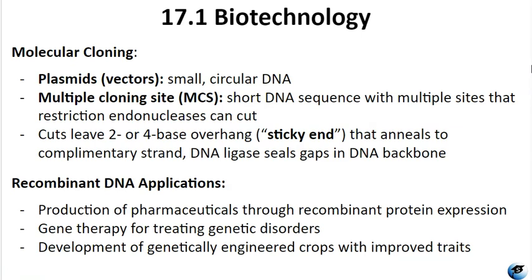Plasmids occur naturally in bacteria such as E. coli, and they have genes that confer advantageous traits like antibiotic resistance. Scientists have repurposed and engineered plasmids as vectors for molecular cloning and for large-scale production of reagents like insulin and human growth hormone. Their effectiveness is partly due to the multiple cloning site (MCS), a short DNA sequence that contains multiple sites recognized and cut by restriction endonucleases — enzymes that identify a specific DNA sequence. When the restriction endonucleases cut the DNA, it creates a two-to-four base overhang called a sticky end.